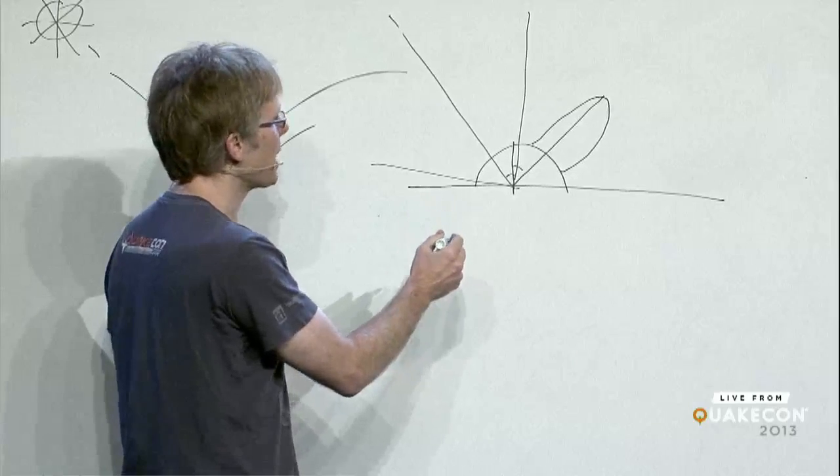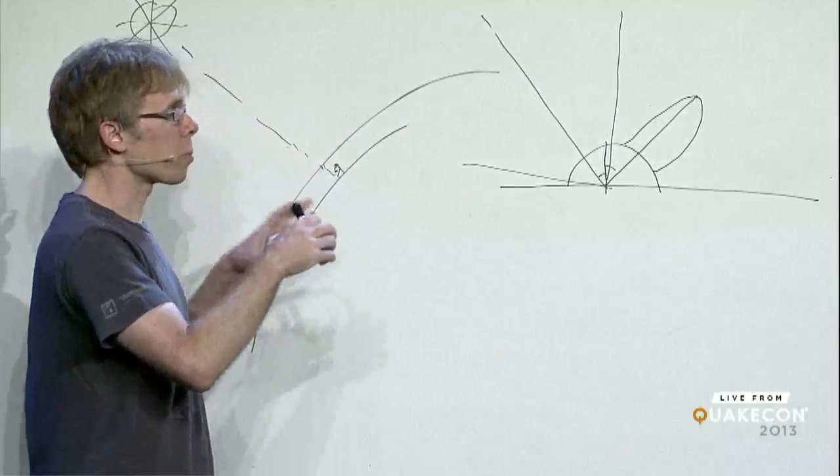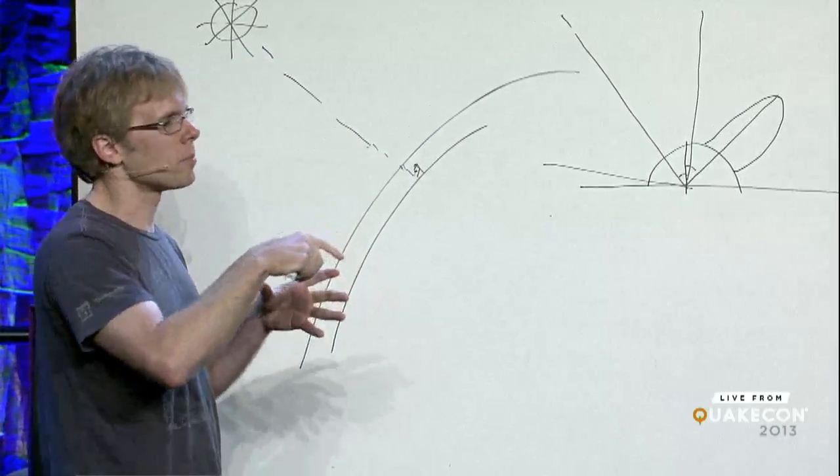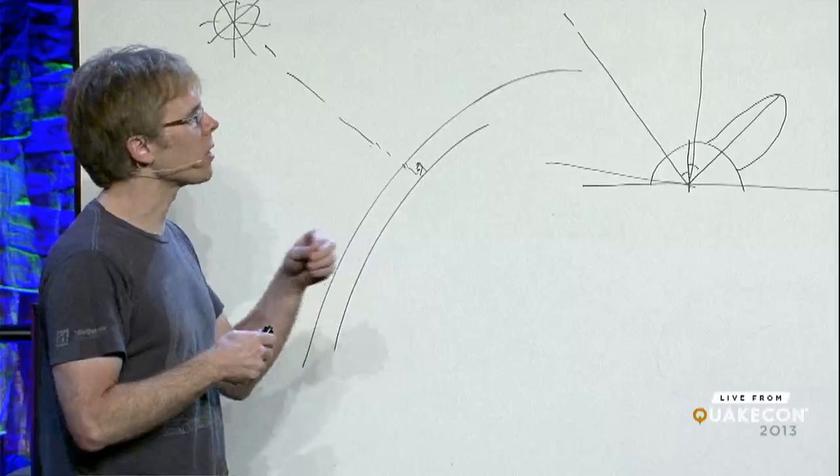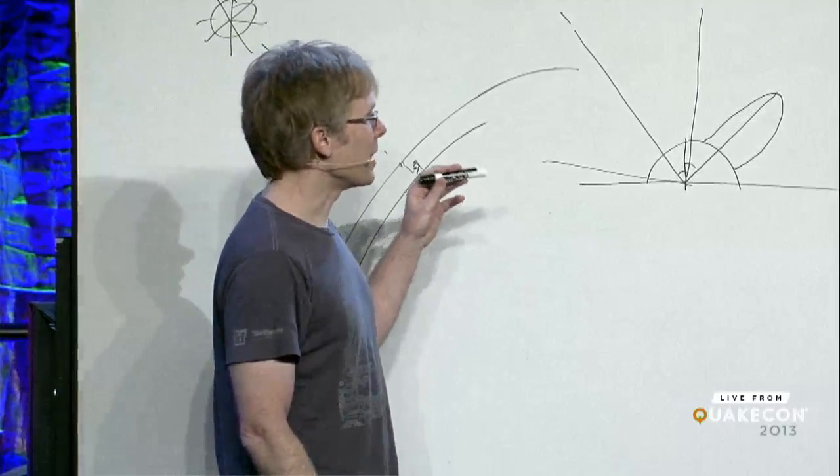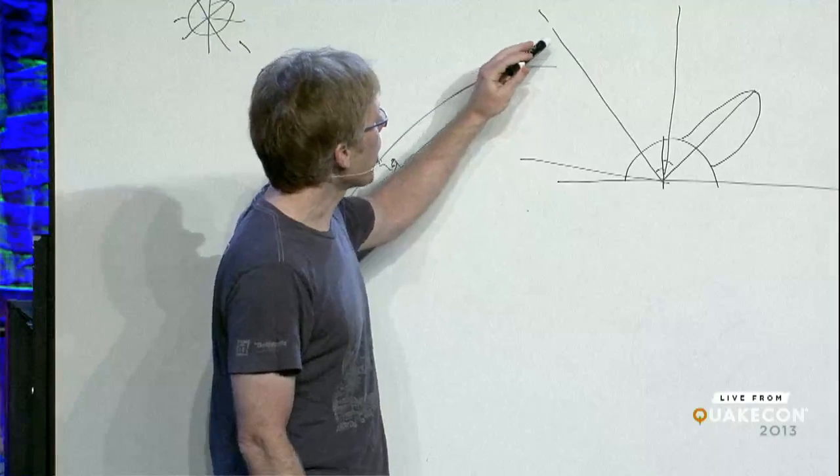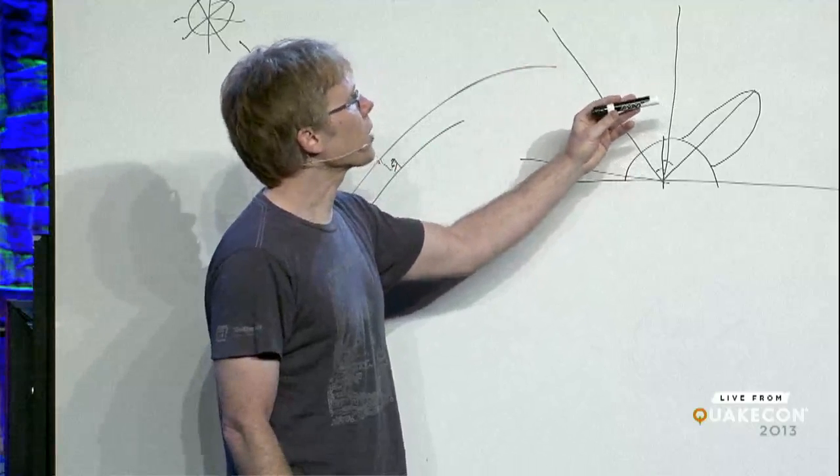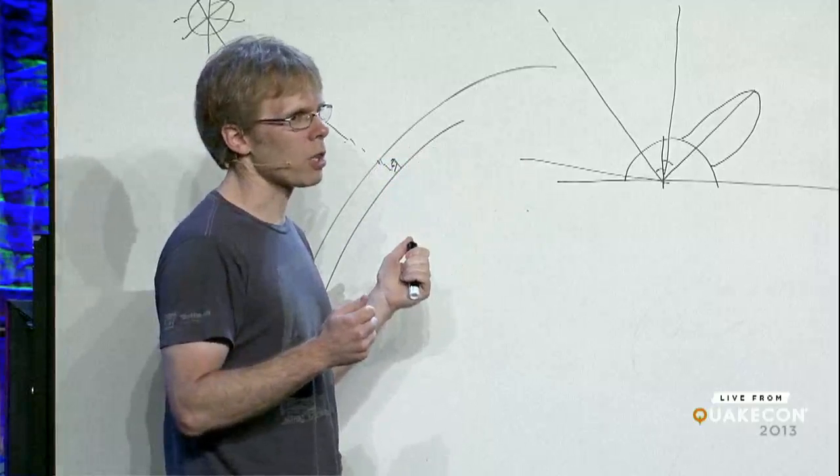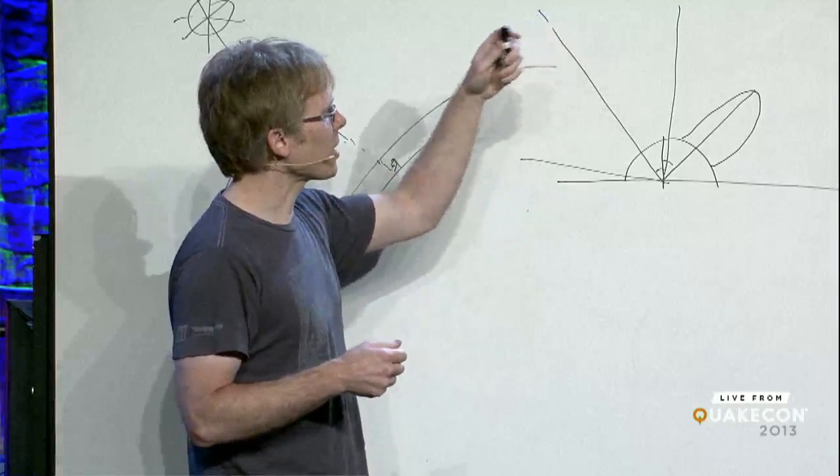But these can actually get quite complicated. And the simplifications that we use in graphics sort of approximate these, but you can measure these with specific tools that go in and take lots of samples from moving the lights around, because it depends. Unfortunately, this is one of the areas where it does get not so great for computer graphics. It depends both on the incoming direction and the outcoming direction. And those are two angles in each one, so it winds up being a four-dimensional equation to say how light comes in here, how does it come out in some other direction.